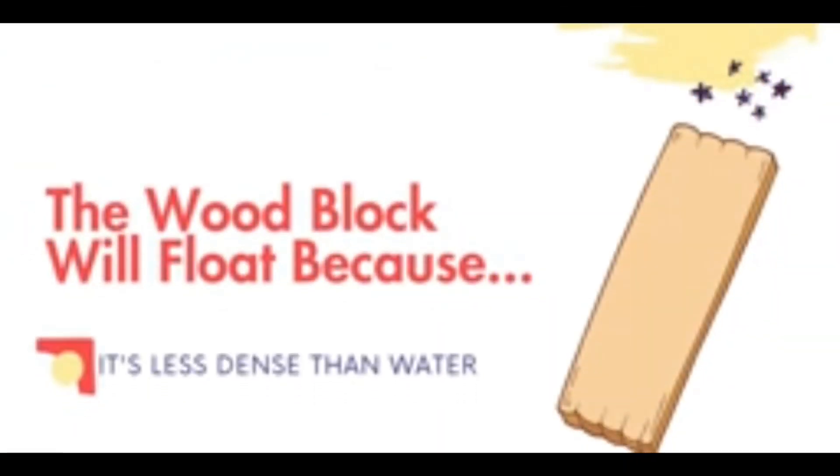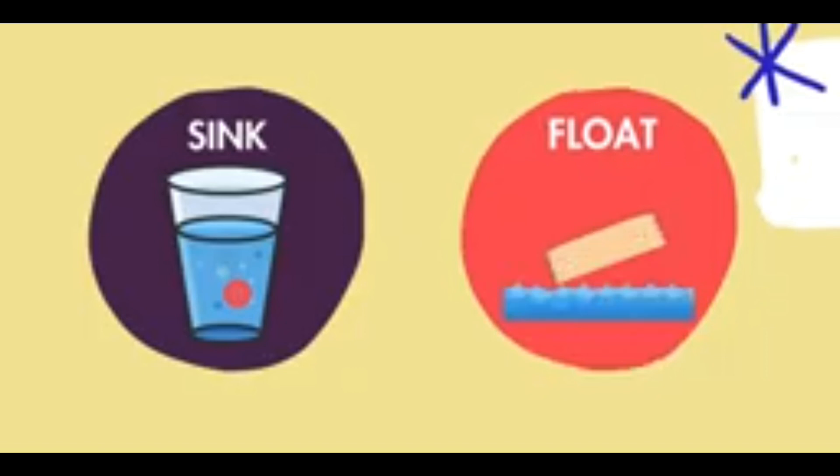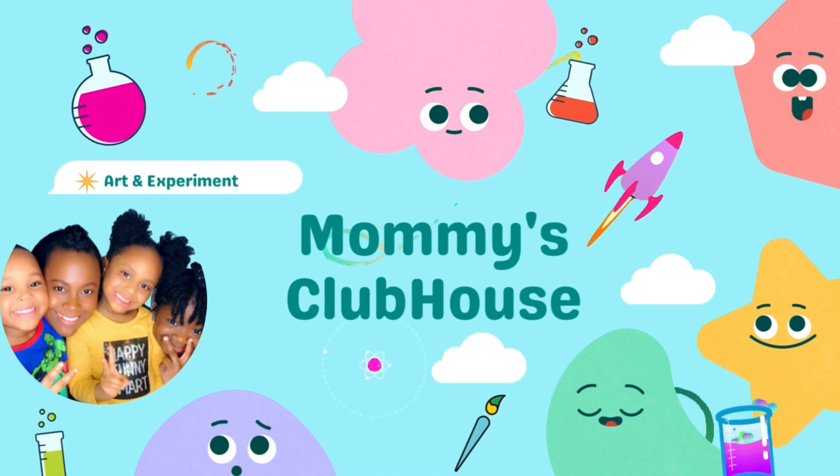A block of wood can float because the material has less density than water. Objects that are less dense than water float. Objects that are more dense than water sink. There are a lot of ways you can explore density at home.